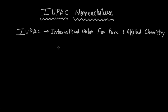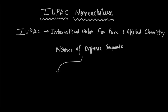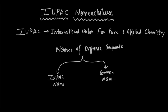Before that, let's try to understand the name of an organic compound. Organic compounds have two kinds of names. There is an IUPAC name, which is based on the rules set by the IUPAC. And the second way to name it is via the common name, and the common name is basically based on the source — depending on the source of the organic compound, we give it the common name.